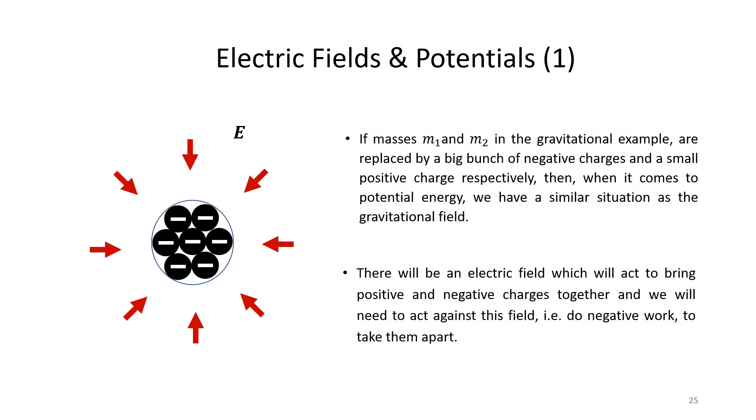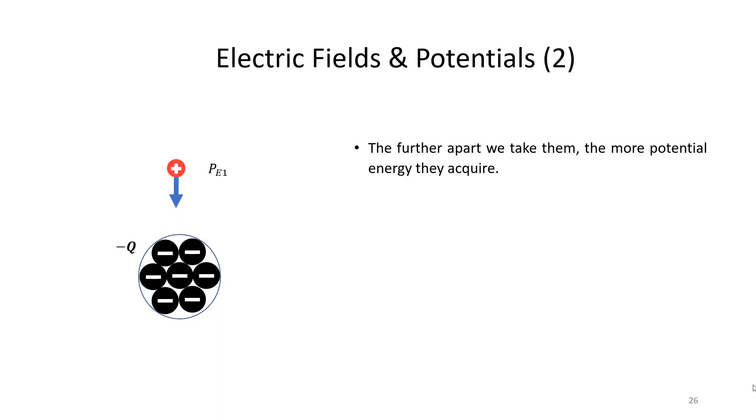There is an electric field which will act to bring positive and negative charges together, and we will have to do negative work, i.e. work against the field, to take them apart. So suppose that we have a positive charge at position 1, where it will already have some potential energy.